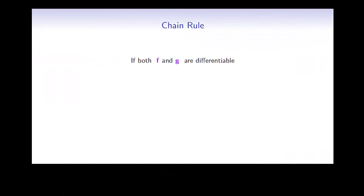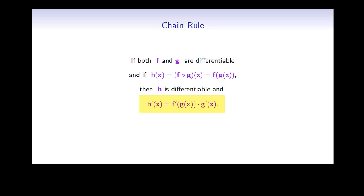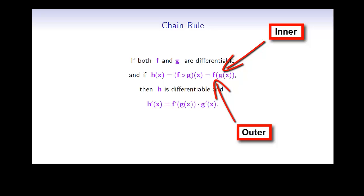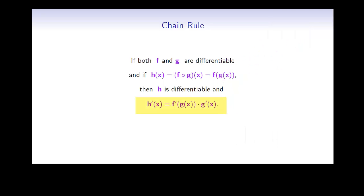The chain rule states that if f and g are both differentiable functions, and if h is the composition of f and g, namely f of g, then h is a differentiable function, and h prime of x is f prime evaluated at g of x times g prime of x. Rephrasing this: f is the outer function, g is the inner function, and the derivative of h is the derivative of the outer function evaluated at the inner function times the derivative of the inner function.